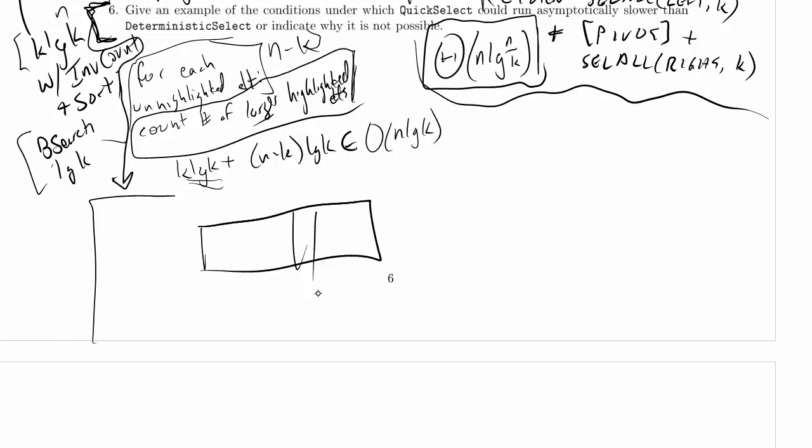So can deterministic select do that? Can deterministic select ever do worse than linear performance? No, it can't, because that's what the deterministic part in deterministic select actually means. It will never, ever do worse than that.